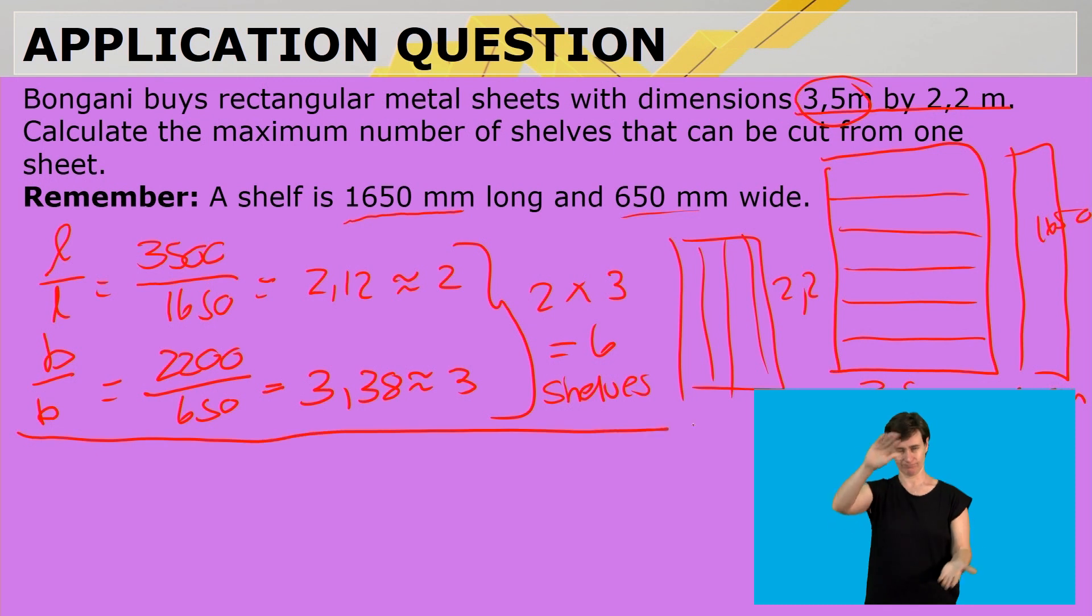Now, if we take the width and the length, so it's the length compared to the width, is 3,500 divided by 650. That is 5.38, so it's 5.